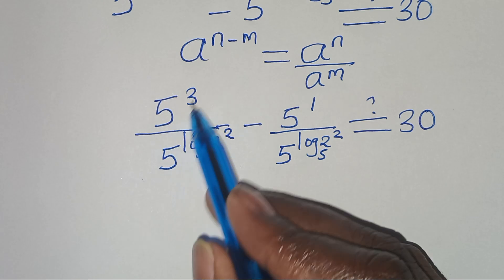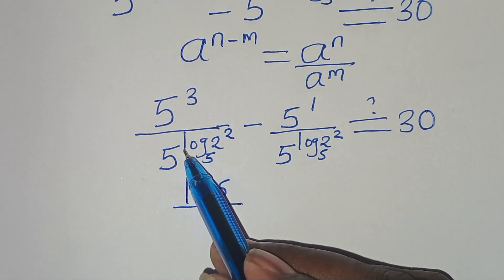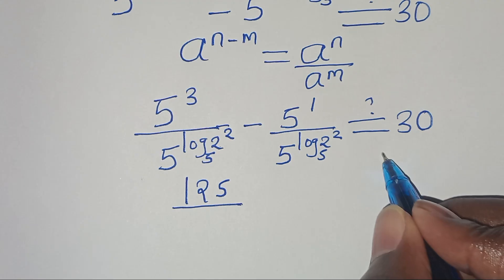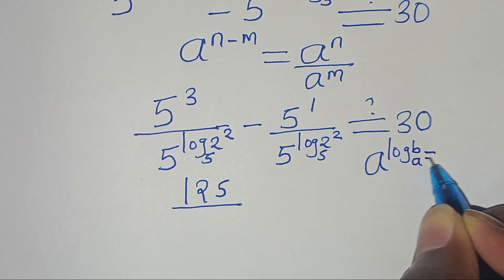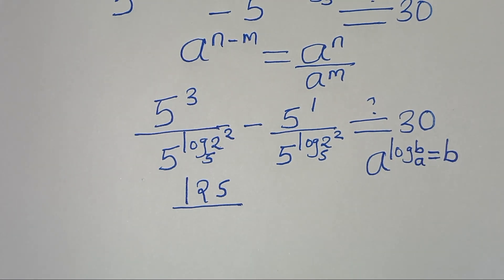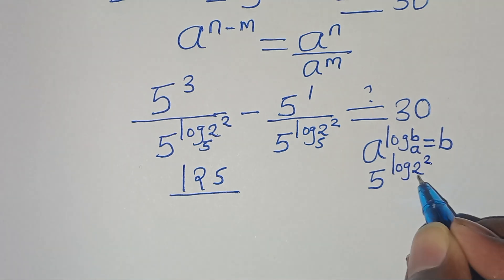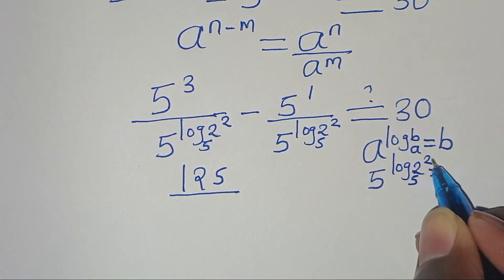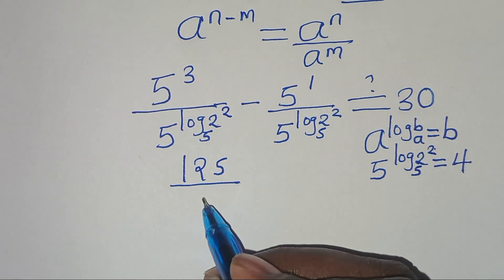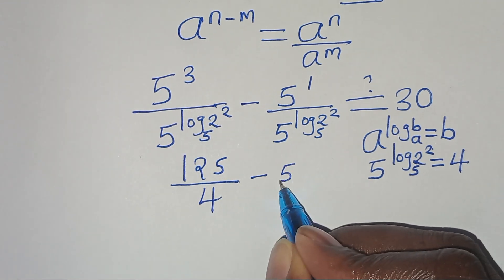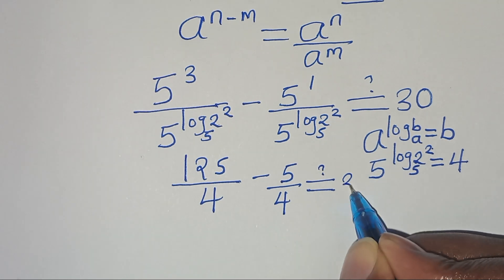Now, 5 to the power of 3 is 125. Now 5 to the power of log 2 squared to base 5 is in the form of a to the power of log b to base a, which essentially gives us a value of b. So this implies that 5 to the power of log 2 squared to base 5 is equal to 2 squared, which is equal to 4. So now we have 125 divided by 4, minus 5 divided by 4. This is supposed to give us a value of 30.